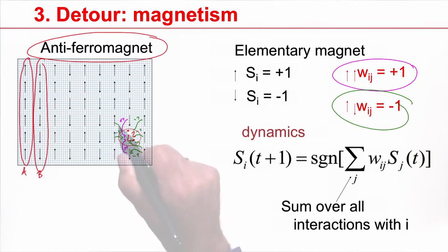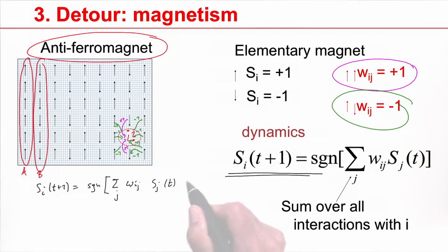And now I can calculate the state of my needle at position i at time t plus one. It's the sign of this big sum over all neighbors, w_ij s_j of t. This is just a copy of the formula here. Now let's look at these. I have a couple of neighbors that have a value plus one, and they come in with the green interactions, and the green interactions are minus one.